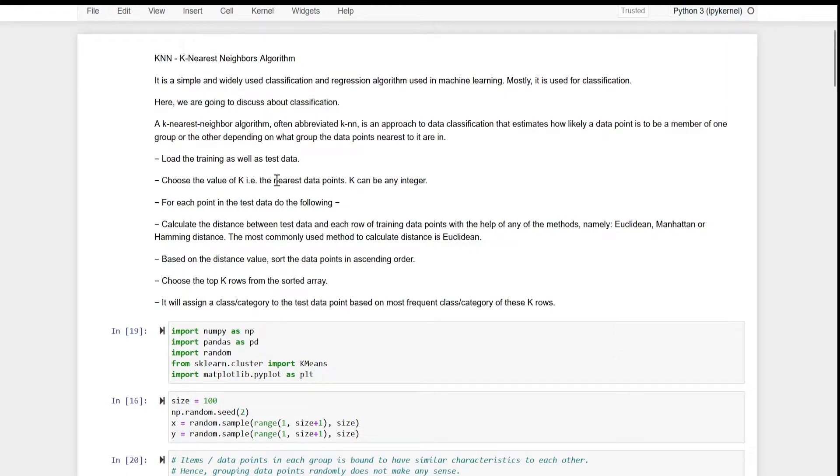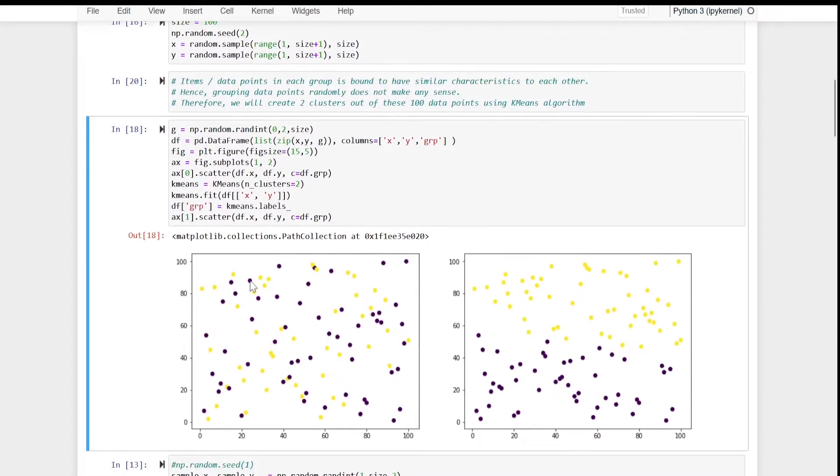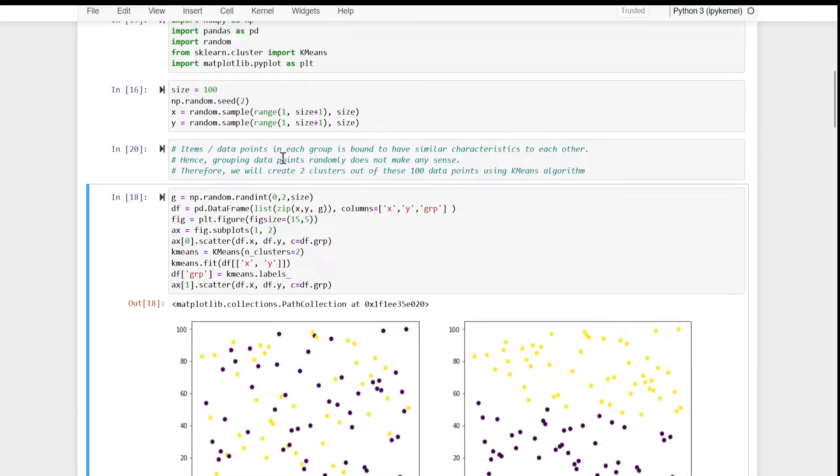Hi guys, in this video we will use KNN classification addressing the anomaly that was there in our first video on KNN. So what was that anomaly? Let us discuss that. See, earlier when we created data points, we grouped them randomly and that approach is not correct. Why? Let us read these comments. Items or data points in each group is bound to have similar characteristics to each other. Hence, grouping data points randomly does not make any sense.